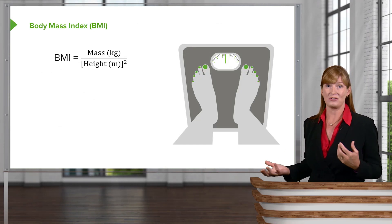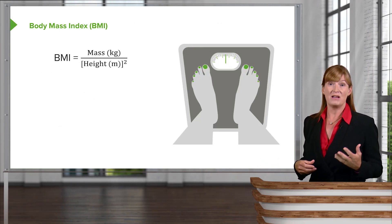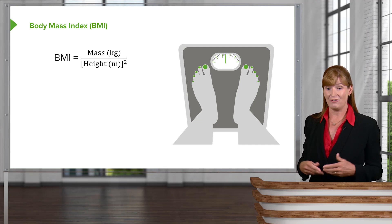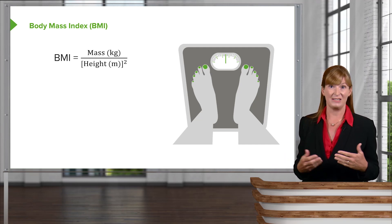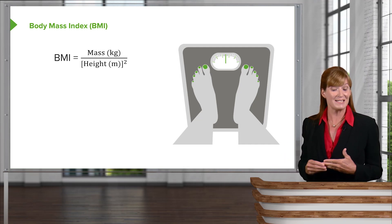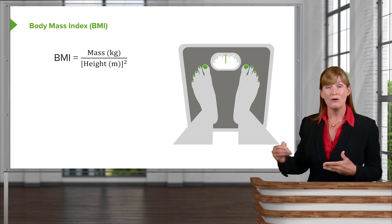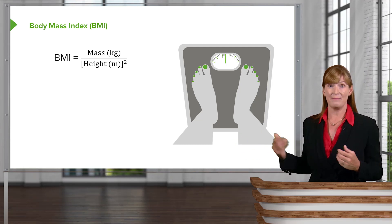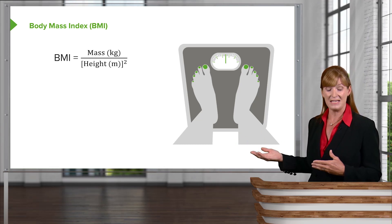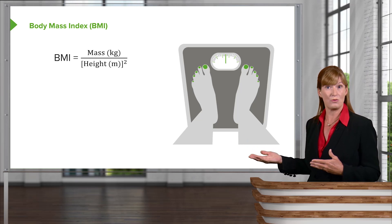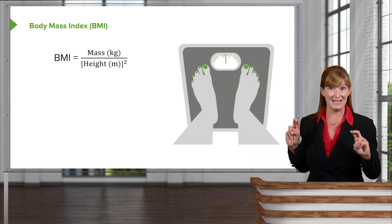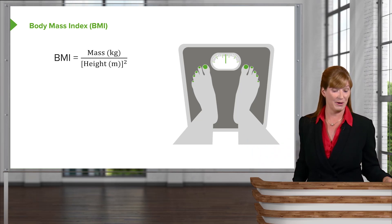We don't need to actually measure fat concentration or fat percentage or lean body mass for BMI — and that's one of the criticisms of it. We are simply taking kilograms and dividing by height in meters squared, and that gives us a body mass index number.